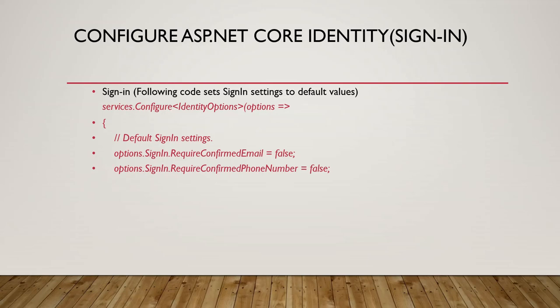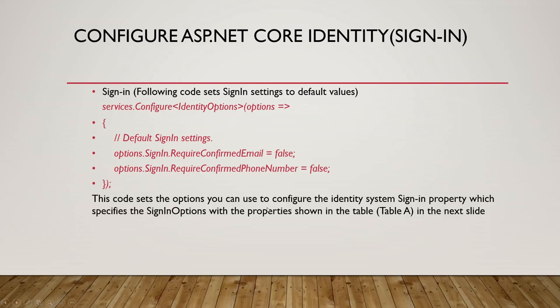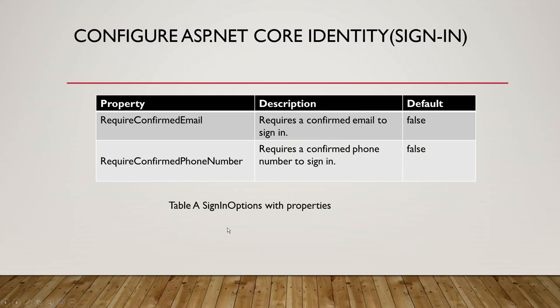The default sign-in settings are: options.signin.require_confirmed_email equals false, and options.signin.require_confirmed_phone_number equals false. This code sets the options used to configure the identity system's sign-in property, which specifies the sign-in options shown in the table in the next slide.